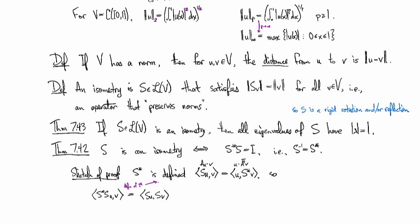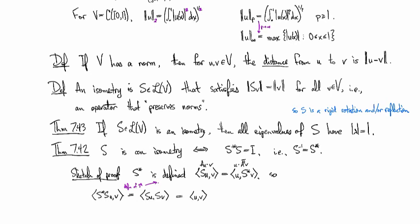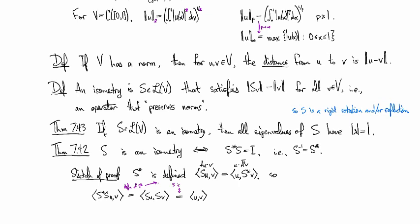And then, the definition of isometry, or actually I shouldn't say definition of isometry, I should say if it's an isometry and there's an inner product, then it has to satisfy this condition right here. This is equivalent to S is an isometry.